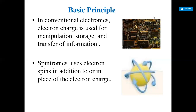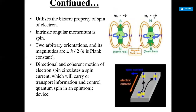In conventional electronics, electron charge is used for manipulation, storage, and transfer of information. Spintronics uses electron spin in addition to, or in place of, the electron charge. The two diagrams show how conventional electronic devices handle storage and transfer of information, and how in the second diagram, the electron revolves with the addition of spin, utilizing the bizarre property of spin of an electron.